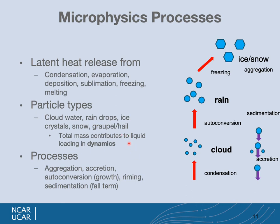The processes include aggregation — for example, from ice crystals to snow; accretion, as rain falls through a cloud and accretes cloud droplets to grow; autoconversion, which is the growth of cloud water to rain droplets as particles grow in size; riming, which is a combination of water processes with ice particles leading to denser particles; and sedimentation, where some particles fall and we have to treat that process inside the microphysics.